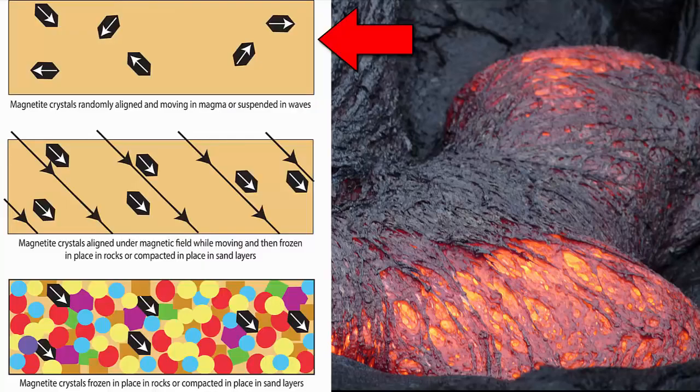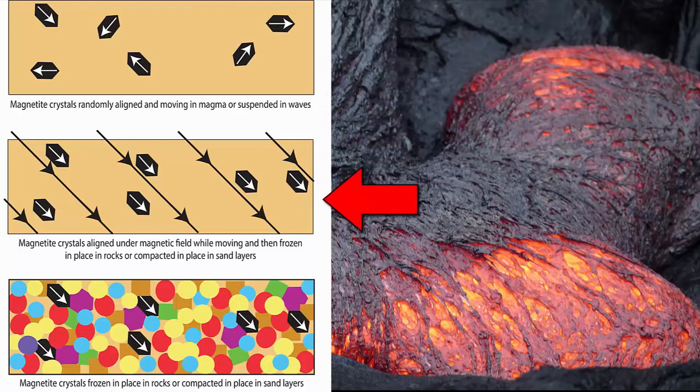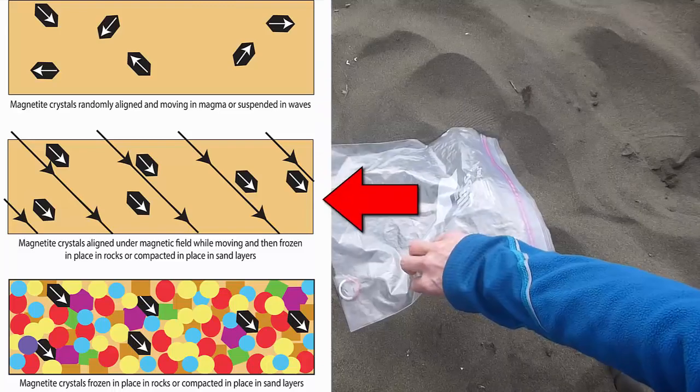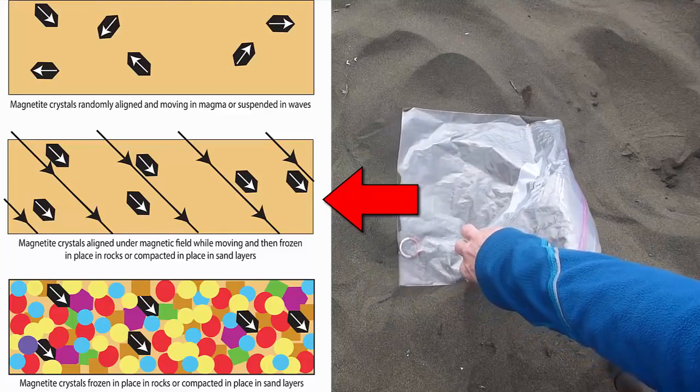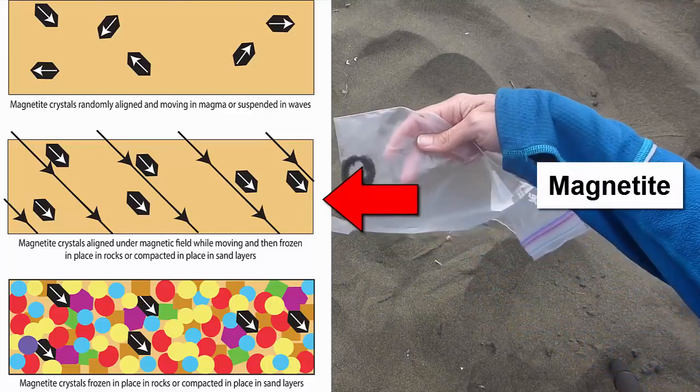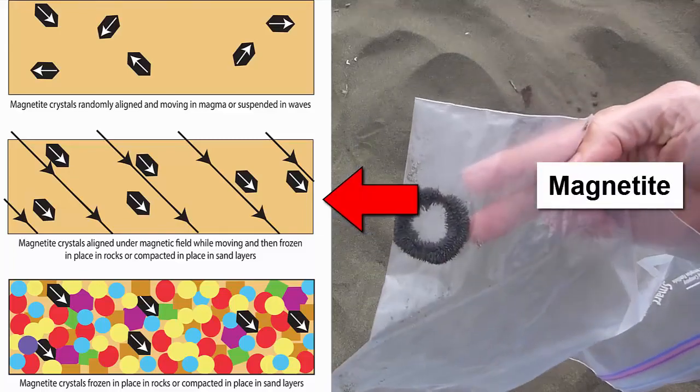As crystals begin to form during cooling, they are free to move. Any magnetic minerals that form will rotate to align themselves with Earth's magnetic field. And there's one magnetic mineral that is found in all volcanic rocks. It is called, strangely enough, magnetite.